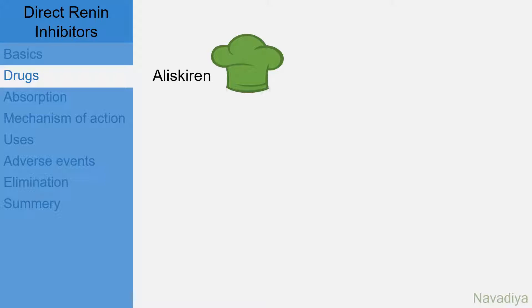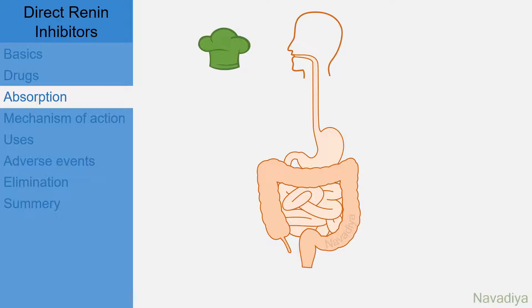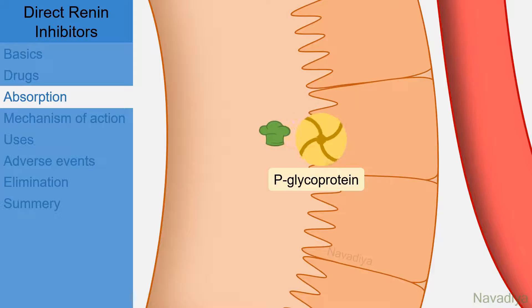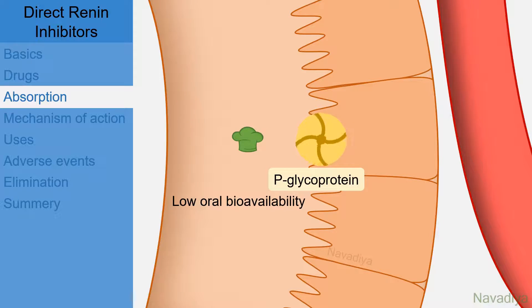Now coming to the topic of this video — direct renin inhibitors. Only one renin inhibitor, Aliskiren, is approved for clinical use as of now. Talking about administration — it is given orally. In the intestine, some of the drug is absorbed into the blood, but some is extruded back into the lumen of the intestine by P-glycoprotein. This accounts for the low oral bioavailability of Aliskiren.